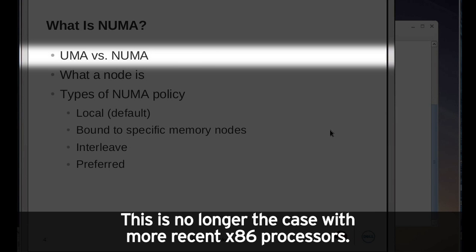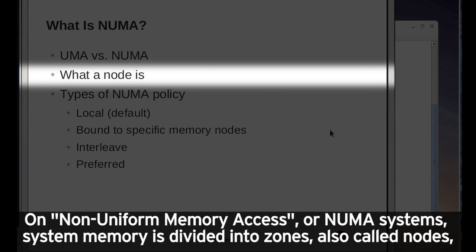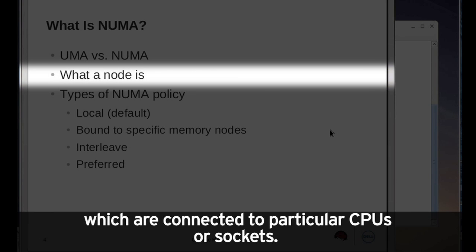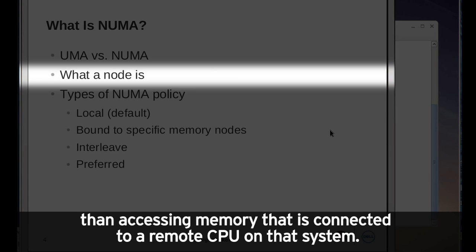This is no longer the case with more recent x86 processors. On Non-Uniform Memory Access, or NUMA, systems, system memory is divided into zones, also called nodes, which are connected to particular CPUs or sockets. Accessing memory that is local to the CPU is faster than accessing memory that is connected to a remote CPU on that system.